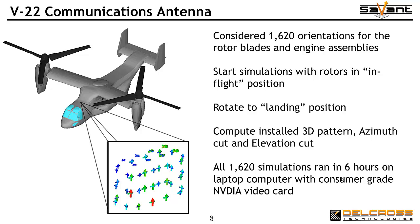To generate the animations that you're about to see, 1,620 static orientations for the rotor blades and engine assemblies were run. In each simulation step, the full 3D radiation pattern was computed and both an azimuth cut and an elevation cut were extracted. All simulations ran in 6 hours on a laptop computer with a stock NVIDIA video card, utilizing parallel processing in the onboard GPU on that video adapter. This is a standard feature in Savant. Now let's see the results.